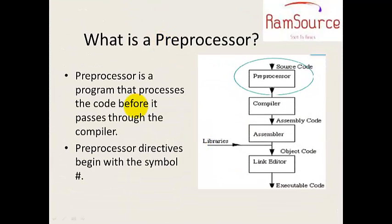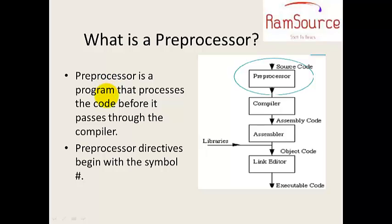What is a preprocessor? When a program executes, the preprocessor is first to execute. It checks the hash directives and header files in the program. The preprocessor is first to check before the compiler. That is the main usage of the preprocessor.